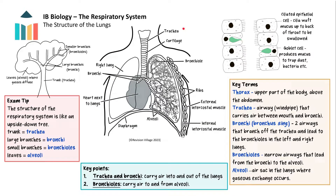This diagram shows the main structures of the respiratory system. Here are the left and right lungs, housed within the thoracic cavity and protected by the rib cage. The heart is positioned between the lungs, which reduces the distance that deoxygenated blood needs to travel from the heart to the lungs, and the distance for oxygenated blood to get back to the heart, allowing for efficient gaseous exchange.